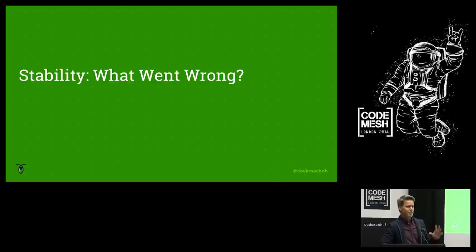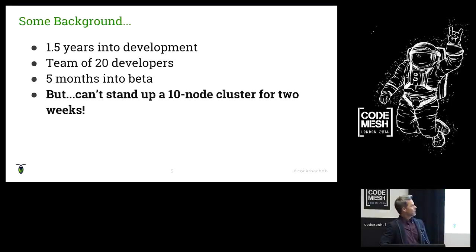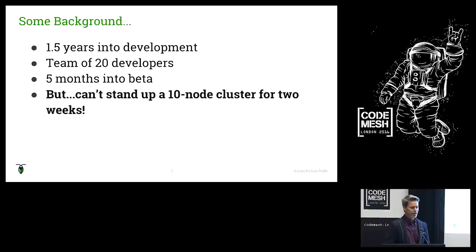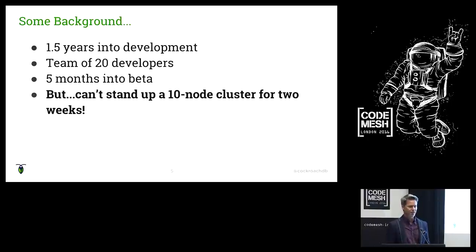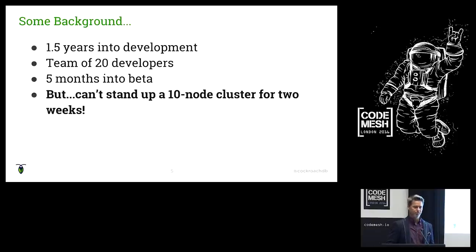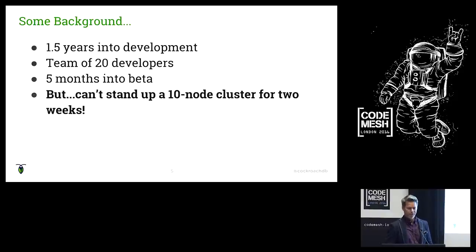We had a big crisis with stability. This was a year and a half into the development of Cockroach. We announced our beta in April and it wasn't stable then. It was a Q2 OKR, then a Q3 OKR. Five months into the beta, we still didn't have stability. We could stand up a three-node cluster, but as soon as you went to four, six, or ten nodes, emerging complexity would crop up and the system would fall over — sometimes in five minutes, sometimes an hour, sometimes days.